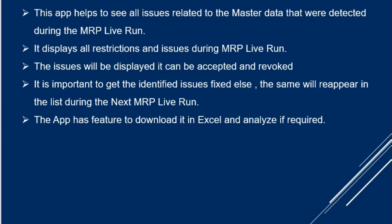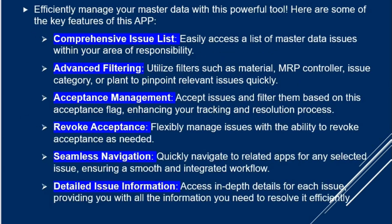Very importantly, if there is any issue which has been identified, it has to get fixed. The objective is to identify the issue and get it fixed. If you just put it as accepted and the issue is not fixed, even after the next MRP live run you will still see the issues there. One more feature is that you can download the output as an Excel file once this is completed.